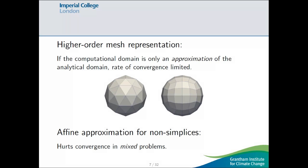So, why do you want to use a higher order mesh representation? Well, if the domain that you're working on is just an approximation of the domain that you want to be working on. So, this is like a flat panel approximation to a sphere. And here is a quadrilateral approximation. Then this can limit your rate of convergence. And if you use this affine approximation with non-simplices, then this also hurts convergence, particularly in mixed problems. So, I'll just give a little demonstration of this.